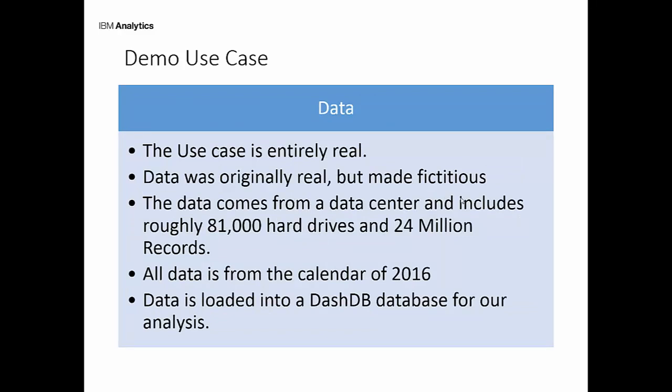The data we're going to be looking at today is entirely real, but it's been made fictitious just to maintain client confidentiality. We're looking at a lot of data — roughly 81,000 hard drives, 24 million records. This data came from the calendar year of 2016. I took this data and loaded it into a DashDB database, and that's where we're going to be accessing this information.